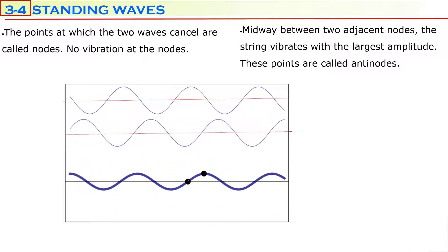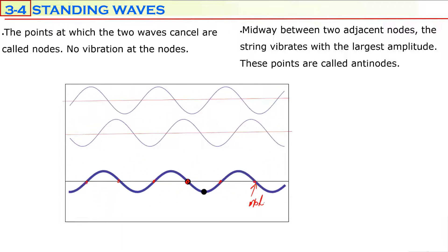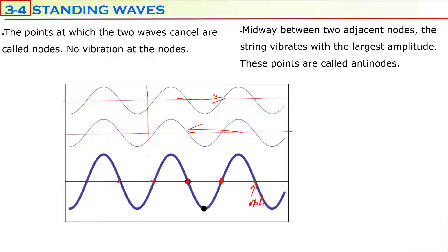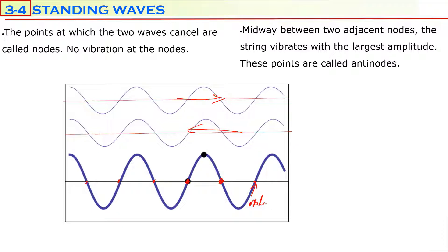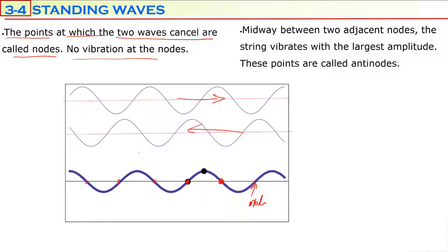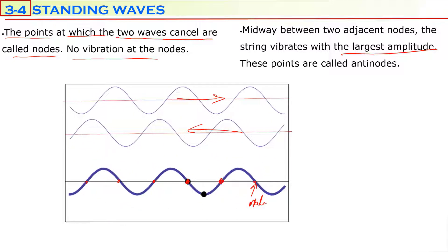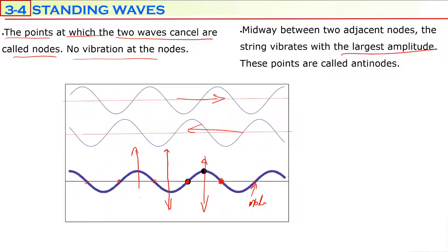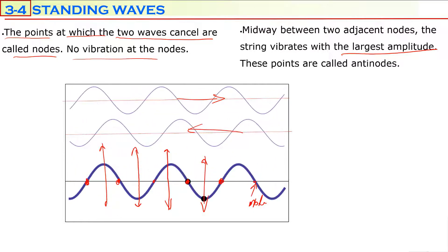There are some special points on a standing wave which do not vibrate — these points are called nodes. At these points, the two waves always destructively interfere: the vector addition of displacement from wave one and wave two is zero. Points where the two waves cancel are called nodes — no vibration at the nodes. Between two adjacent nodes, the string vibrates with the largest amplitude; these points are called antinodes.